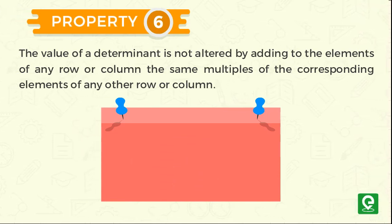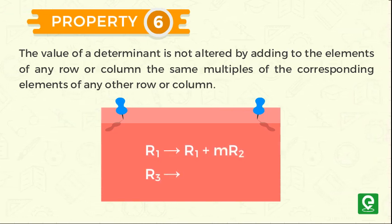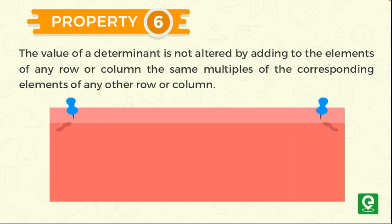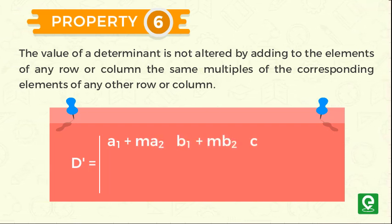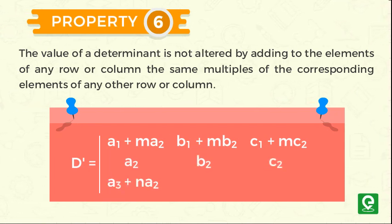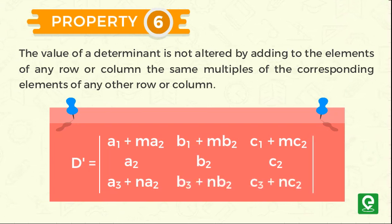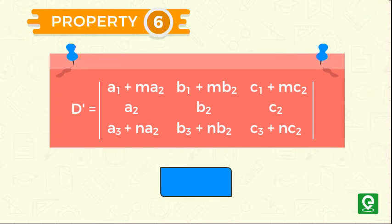Another determinant D dash can be obtained by replacing row 1 by row 1 plus m times row 2 and also replacing row 3 by row 3 plus n times row 2. That is, the determinant D dash is a1 plus m times a2, b1 plus m times b2, c1 plus m times c2, a2, b2, c2, a3 plus n times a2, b3 plus n times b2, c3 plus n times c2. Note that the value of determinant D dash is equal to D.